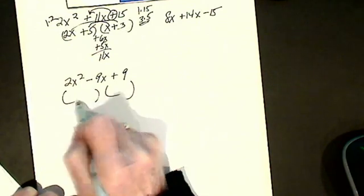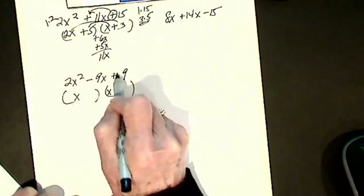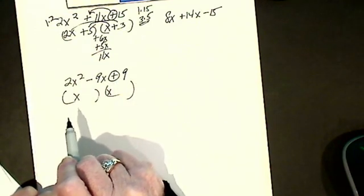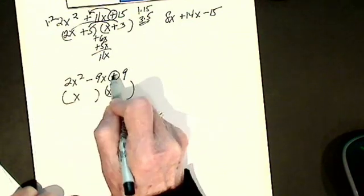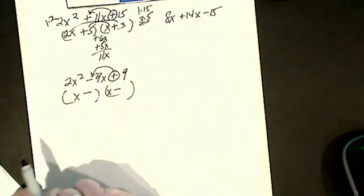I factor. I have x, x. A plus means the signs are the same, plus plus or minus minus. I look to the middle, this has to be minus minus.